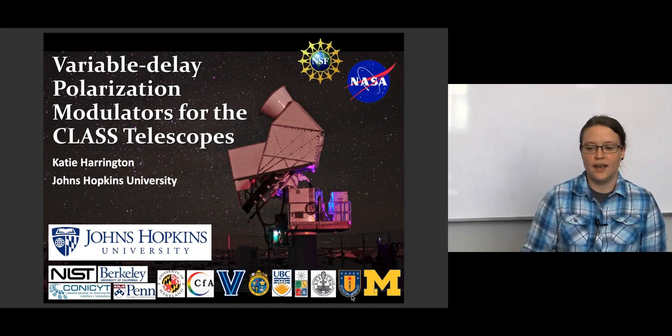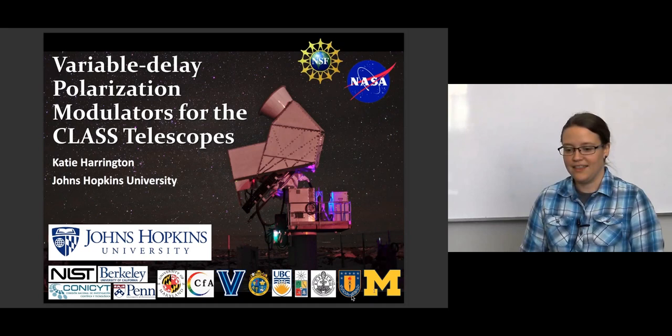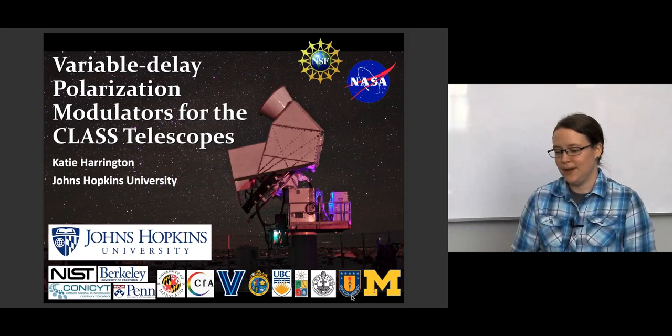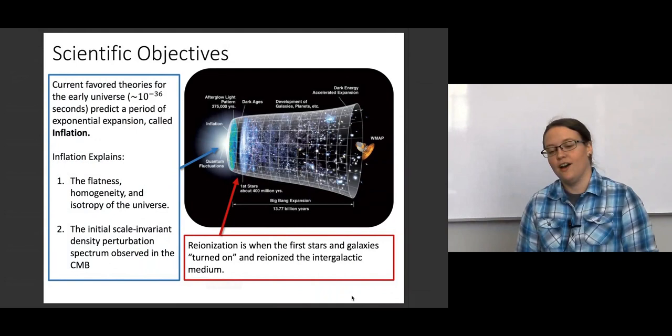So CLASS is a four telescope array that's down in the Atacama Desert in Chile. And we're looking at observing both inflation and reionization, which are two periods in the early universe, through their polarization in the cosmic microwave background. This photo right here is of our first telescope, our Q-band telescope, that's been down there and observing for about two years. And recently, this spring, we actually put out our second telescope, which is the W-band telescope, which has just started observing with the Q-band.